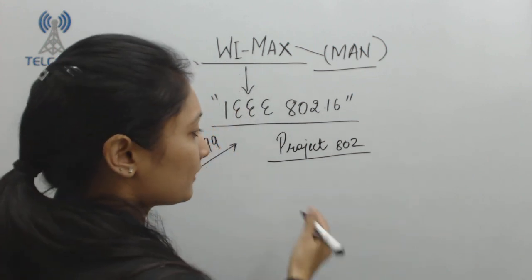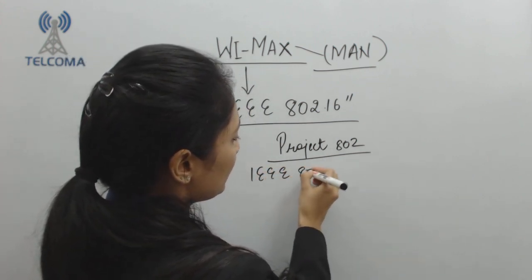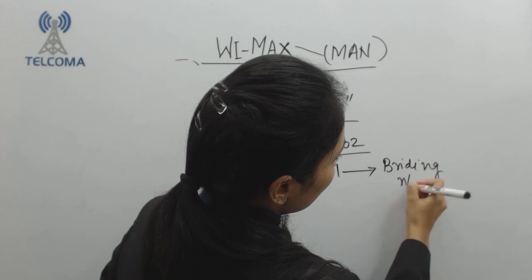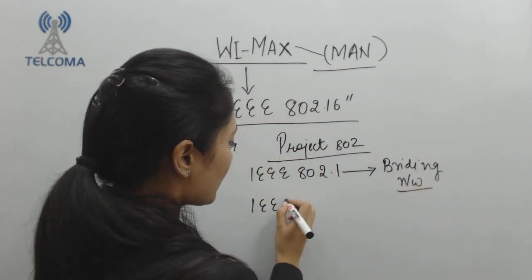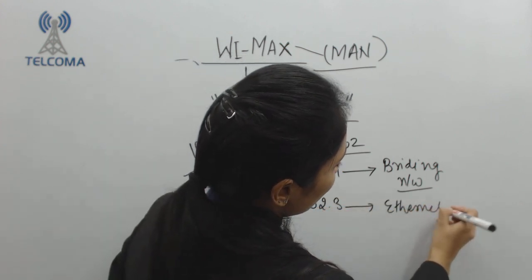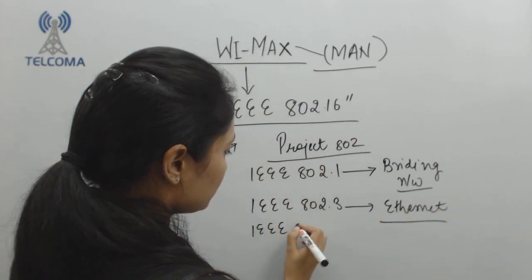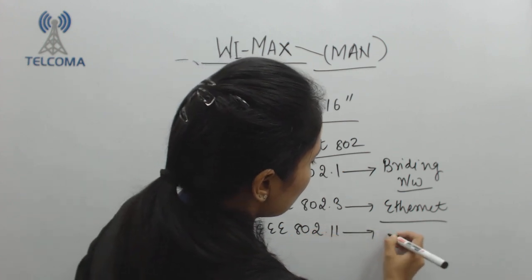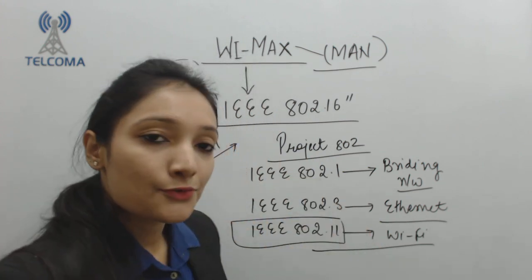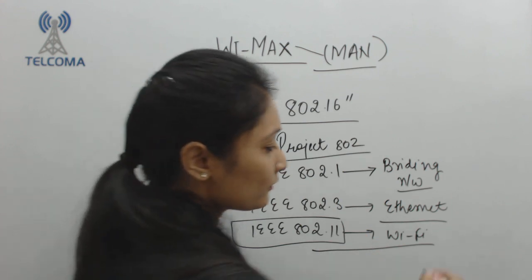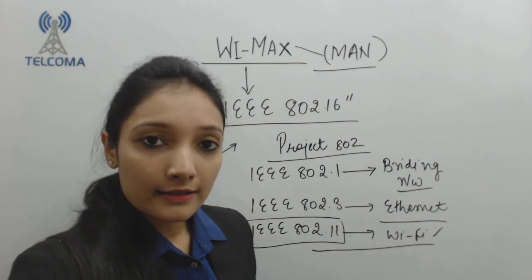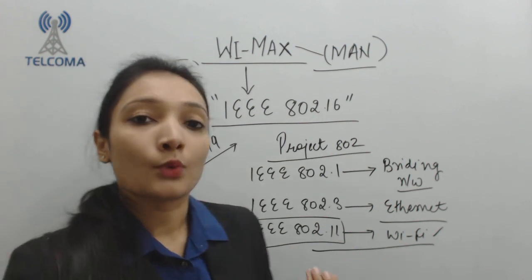We have certain wireless network standards under this project. IEEE 802.1 is for bridging networks, IEEE 802.3 is for Ethernet, and IEEE 802.11 is for Wi-Fi. A Wi-Fi Alliance was created which standardized this family of IEEE standards as Wi-Fi. Similarly, IEEE 802.16 led to the creation of the WiMAX Forum for commercial standardization.